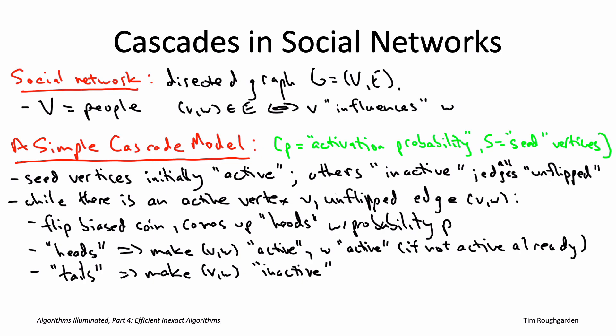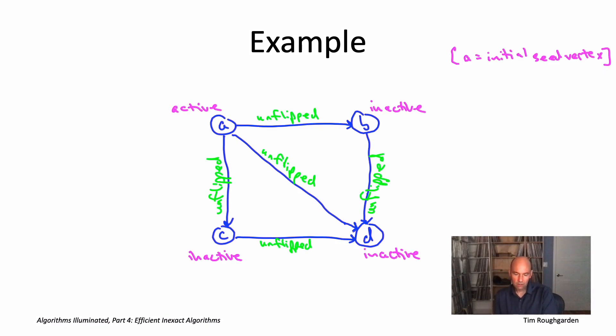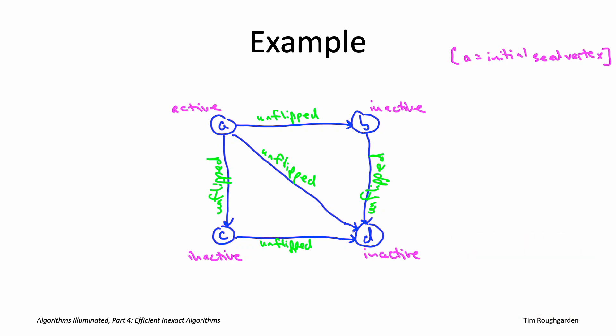Notice that a vertex can have multiple activation opportunities — one for each of its activated influencers. For example, maybe the first two times friends recommend you to see a new movie, you don't pay attention, but the third friend's recommendation is what triggers you to go. So let's look at a simple example with four people A, B, C, and D. In general you can have more than one seed vertex, but in this example we're only going to have one seed vertex and that'll be A. As promised, A starts out active. The other three vertices are inactive, and initially all five edges have not yet been flipped. When the cascade process starts, it asks: is there an active vertex with unflipped outgoing edges? Yes — A is active and none of its outgoing edges have been flipped yet. So A has the opportunity to influence each of B, C, and D.